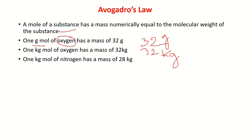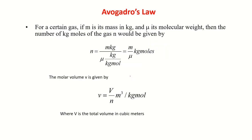The molecular weight of nitrogen is 28, so 1 kg mole of nitrogen has a mass of 28 kg. If m is the mass in kg and μ is the molecular weight of that gas, then the number of moles n equals mass divided by molecular weight. The unit of mass is kg and the unit of molecular weight is kg per kg mole.